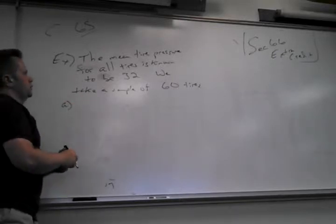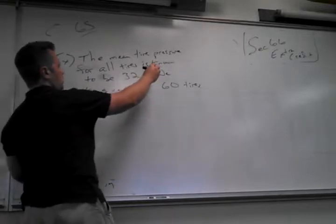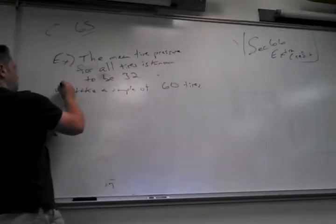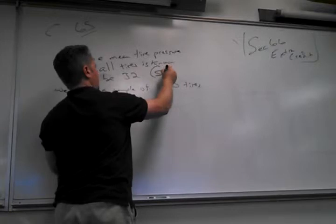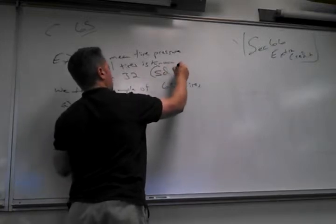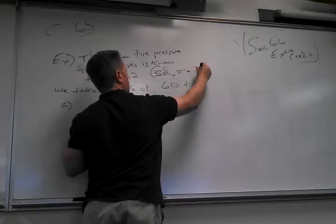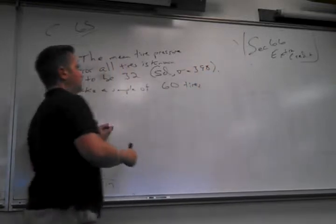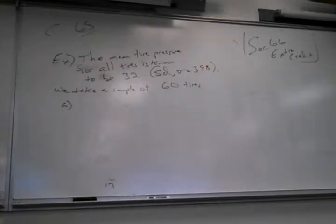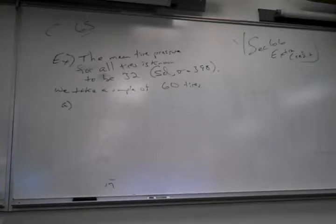The mean tire pressure for all tires is known to be 32 psi. The standard deviation of the population, sigma, is 3.98. We take a sample of 60 tires. Before doing probabilities — are we allowed to use the z-score chart? Why are we allowed to use it?